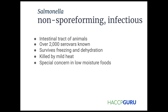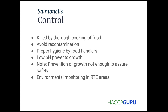If we have an ingredient and we've heated it up, that's what that means — special concern in low moisture foods. How we control it: we kill it through cooking. We just talked about avoiding recontamination and proper hygiene by food handlers. Low pH prevents the growth of it. Even after we've cooked it and done all those things, we still want to make sure the product we produce has a low pH — that's a triple check, a triple gate.